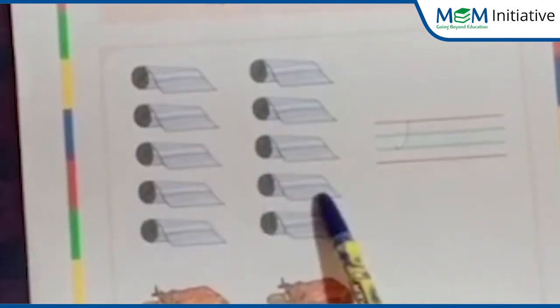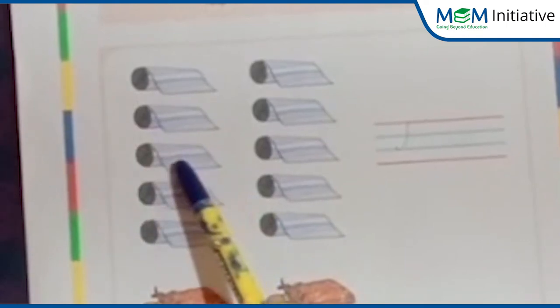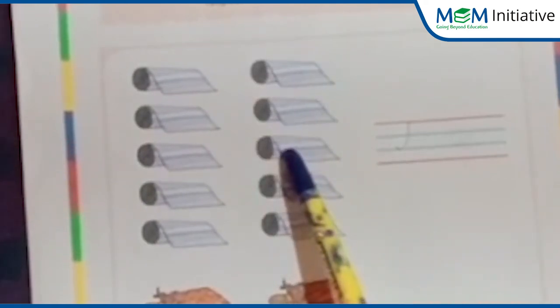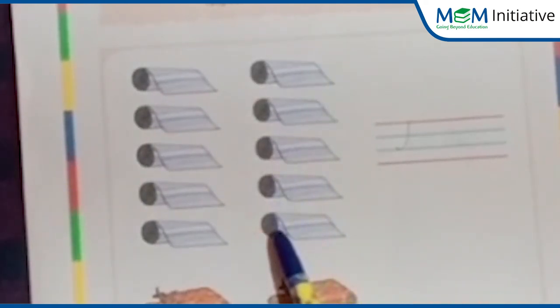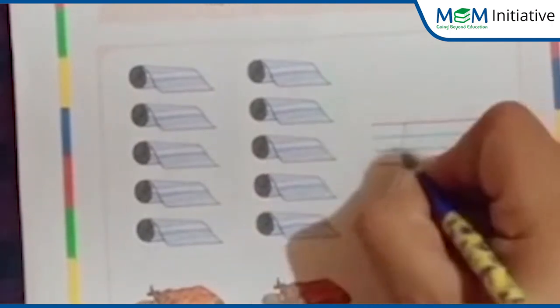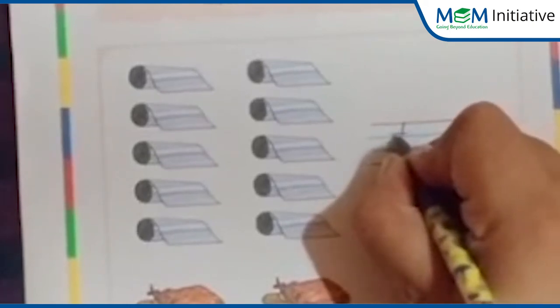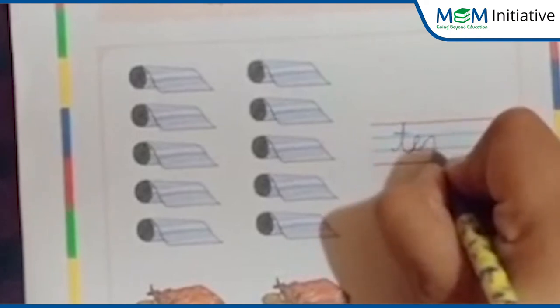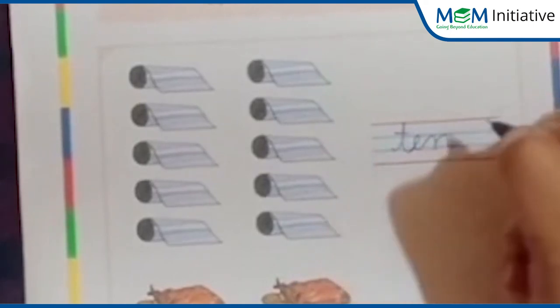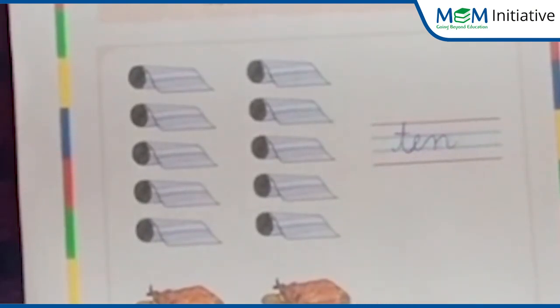Let's count how many mats are there. 1, 2, 3, 4, 5, 6, 7, 8, 9, 10. So let's write down 10 here. T, E, N — 10.